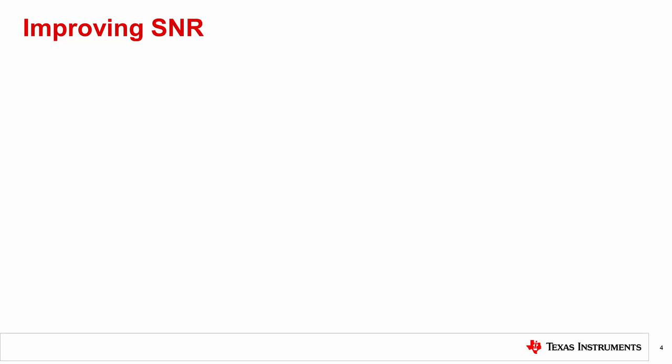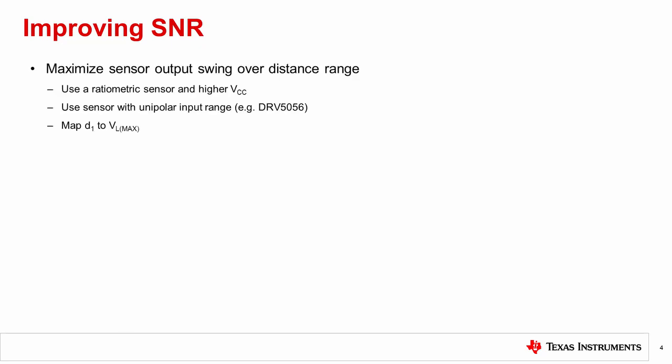A few simple strategies to maximize the signal component of the sensor output include: Use a ratiometric sensor and operate it on the maximum allowed supply voltage. Ratiometric sensors have output ranges that scale with supply voltage, so using maximum VCC produces maximum output swing. For example, DRV5055 and DRV5056 are ratiometric sensors that offer nearly 4.9 volts of output signal swing on max supply voltage.